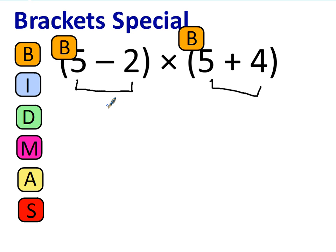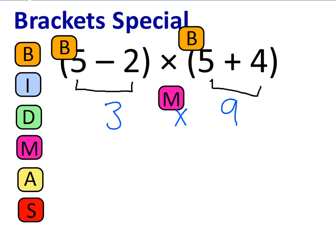My suggestion is we do the left bracket first. 5 take away 2 is 3. 5 plus 4 is 9. We have a multiplication to do — that's the only thing left, in fact. So the answer is 27.